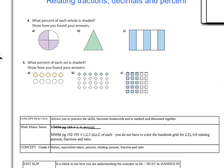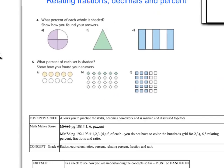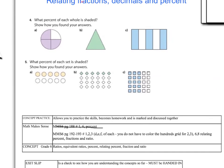All righty. So this was relating fractions, decimals, and percent. And we already did the percent page. So we don't have to do that first portion. We only have to do the second portion, page 192 to 193. Numbers 1, 2, and 3. And we're only doing D, E, and F of each.